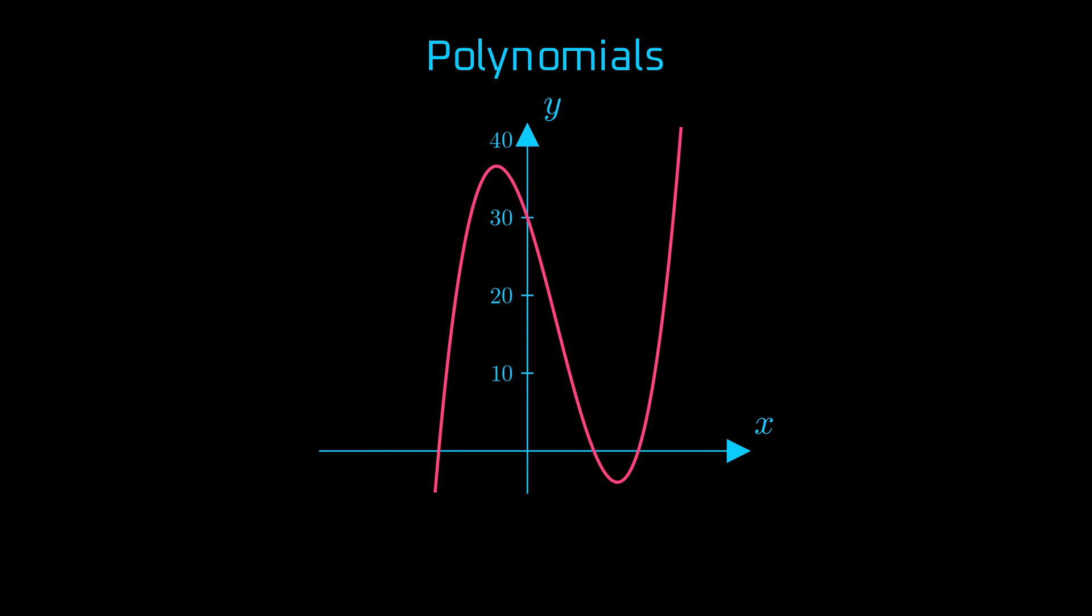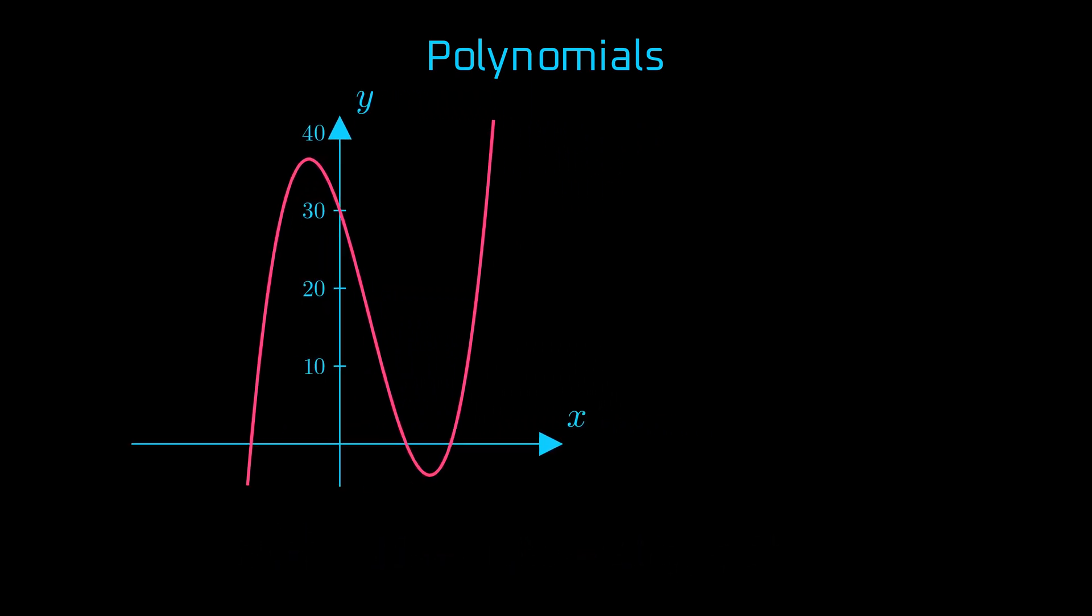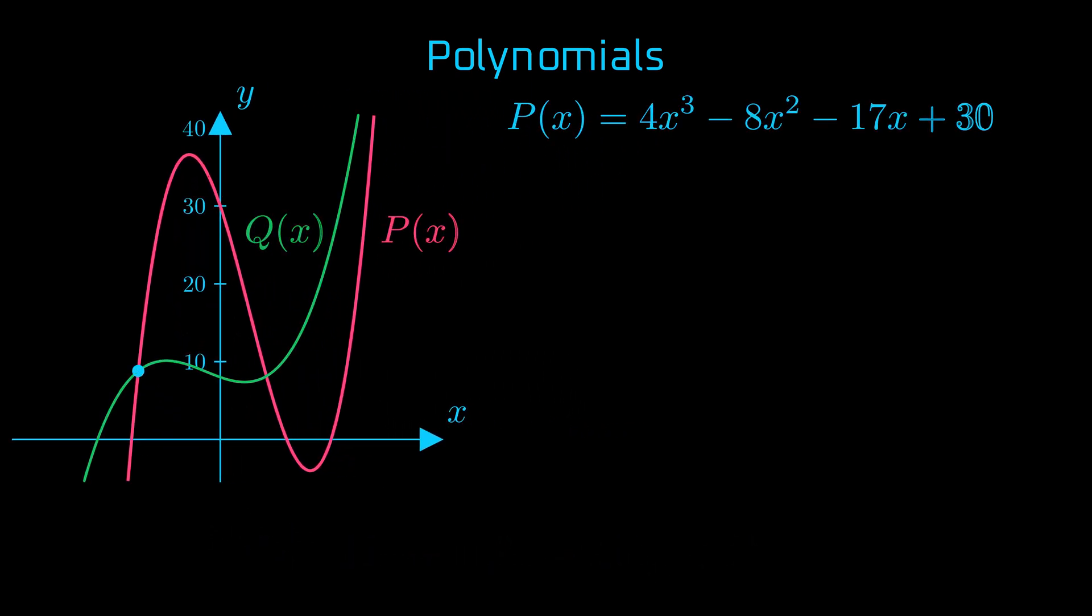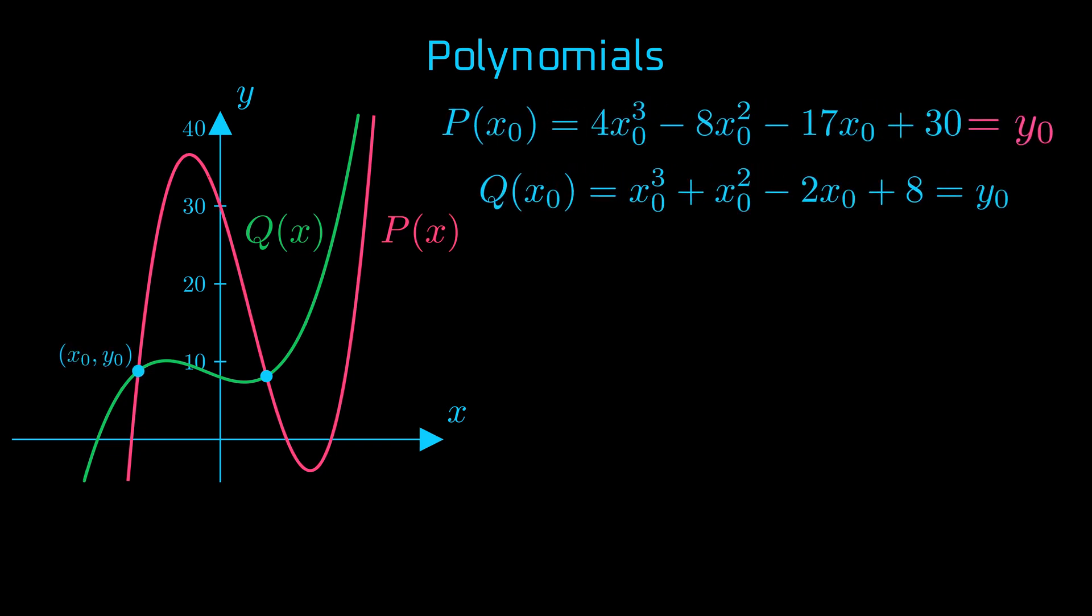Here's where things get interesting. In certain situations, different polynomials can yield the same output for a given input. Suppose we have two polynomials, p of x and q of x that are distinct, but at some x0, they produce the same value, so p equals q at x0.